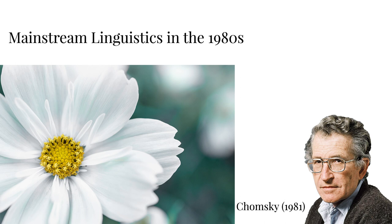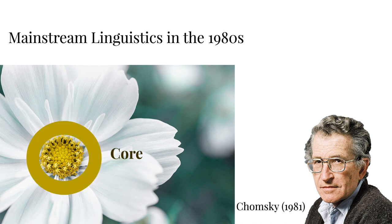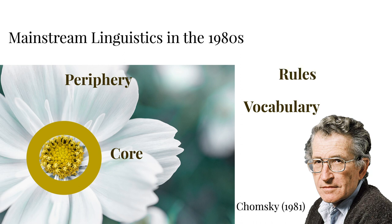Now, what makes construction grammar so special? In order to understand that, we need to understand what Fillmore was reacting against when he and his colleagues started to develop construction grammar. In the beginning of the 1980s, the influential linguist Noam Chomsky introduced the difference between what he considered to be the core of a grammar — a systematic set of grammar rules — and the periphery, or everything that couldn't be described in terms of those systematic rules. So in his view, the grammar of a language consists of a vocabulary or lexicon of words, rules to combine those words, and a list of exceptions to those rules. The problem with this model soon became apparent because the grammars of natural languages are abundant with exceptions and pockets of super-regularities, and many linguists became frustrated with the increasingly large periphery and were looking for solutions.